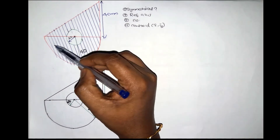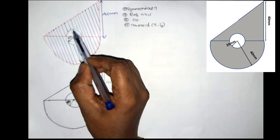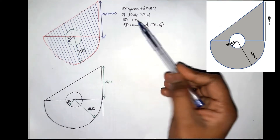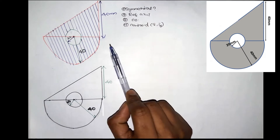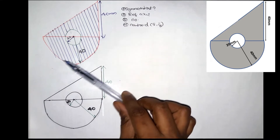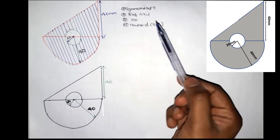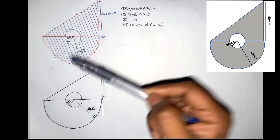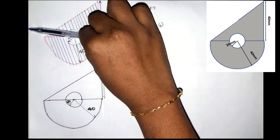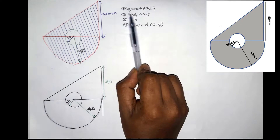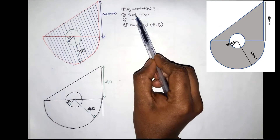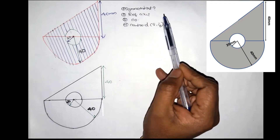This is the shaded area. Now, we have a problem with the centroid area. We will explain one step in detail. The first step is: the figure is symmetrical — now, the figure is not symmetrical. The next step is the reference axis. The reference axis is the center. We will mark the position.